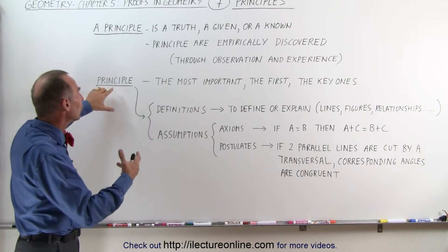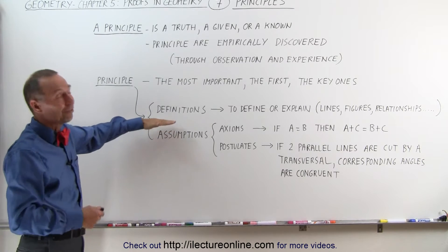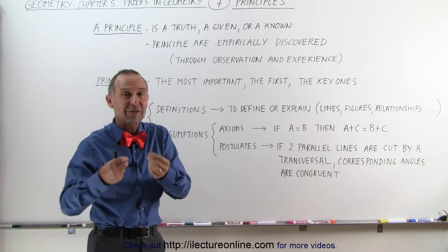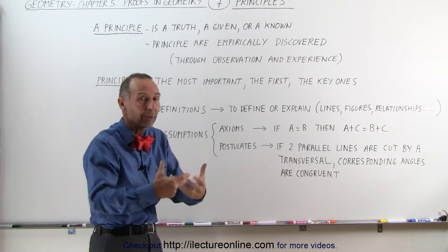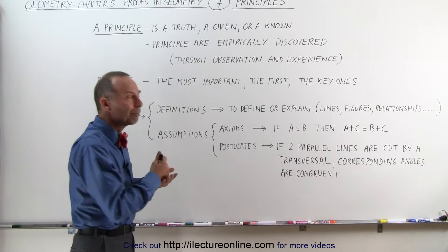Principles are divided into two different things, one called definitions and the other one called assumptions. Definitions simply define or explain particular things. They define what a line is, what a figure is, what a relationship is between the parts of a figure. That's done by definition.